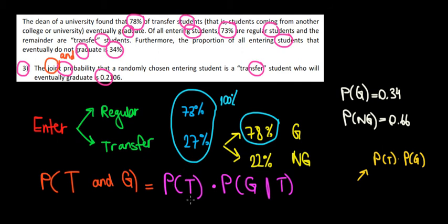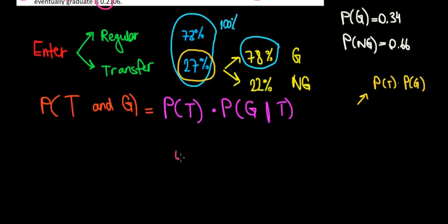So we have the probability of being a transfer student. That is 27%, right? Proportion means probability. So we write 0.27.